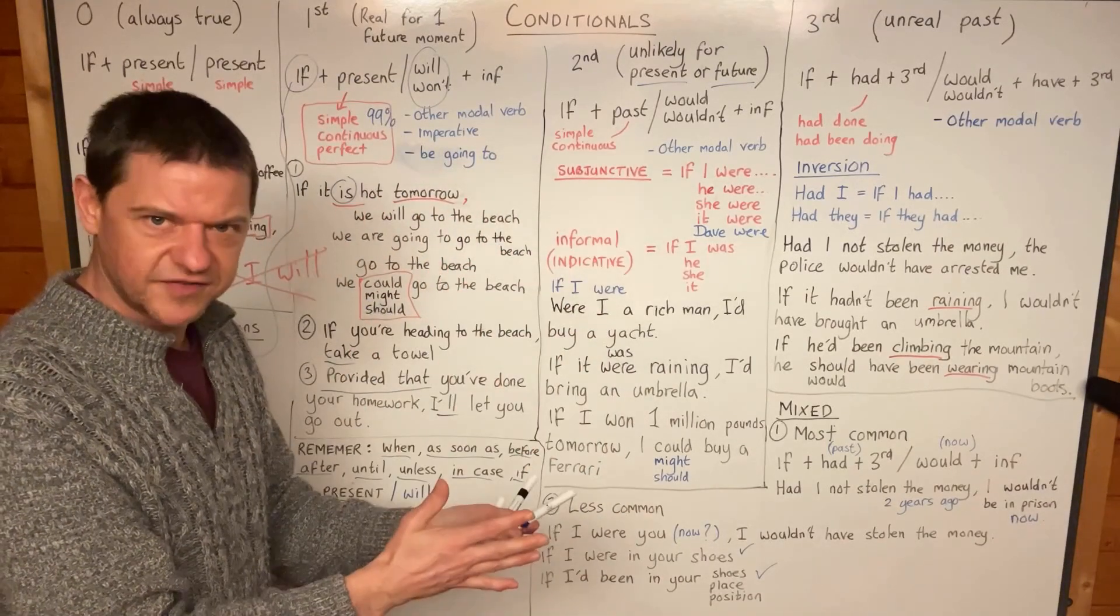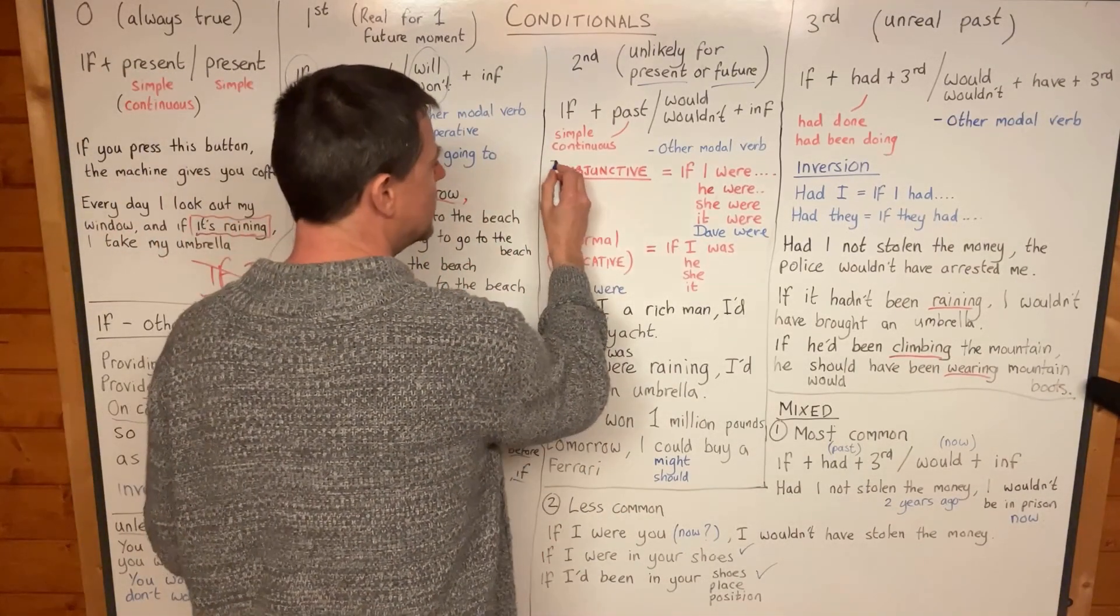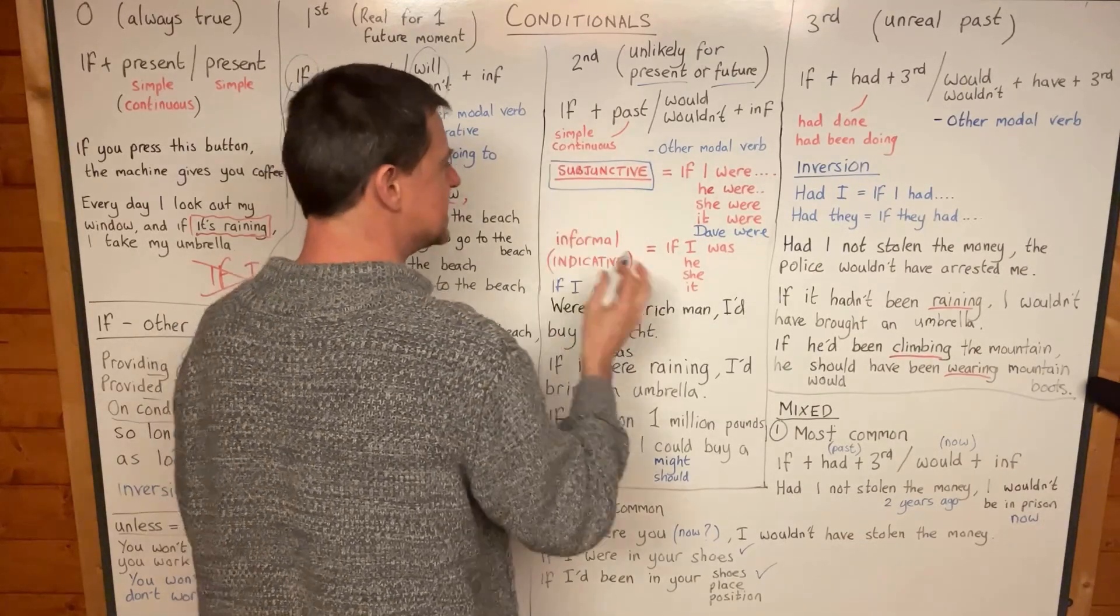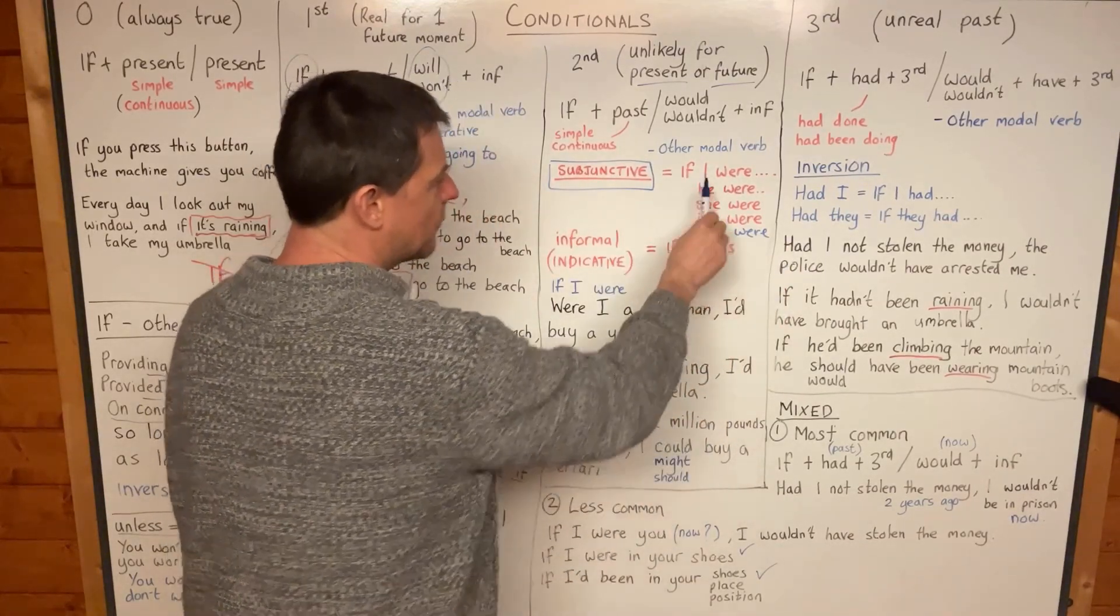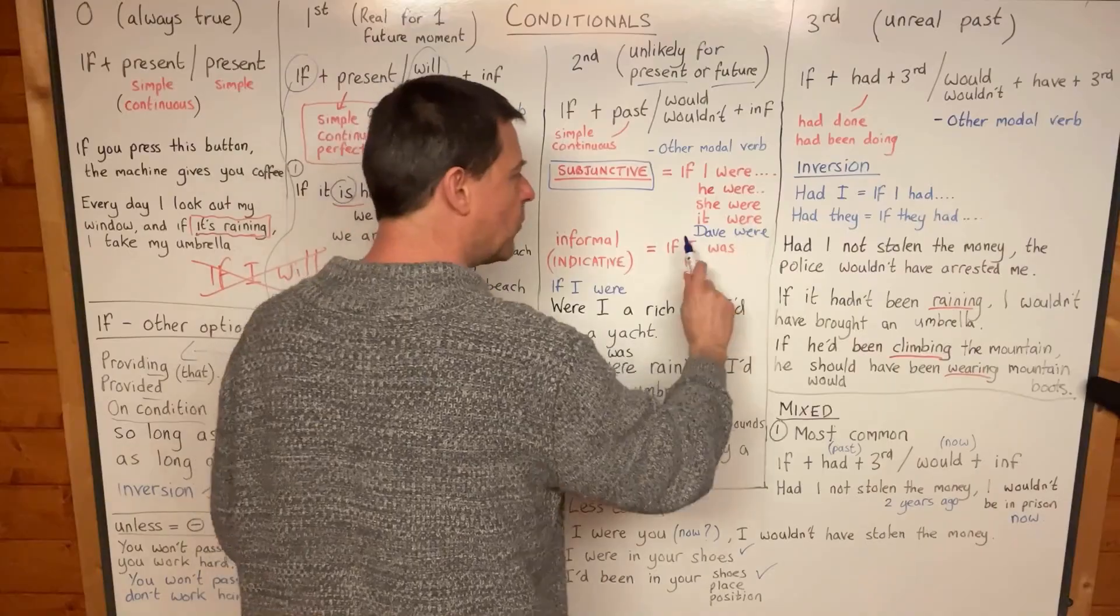And that's weird, isn't it? It's something that we call subjunctive, because usually it's, um, I was, he was, she was, it was, Dave was.